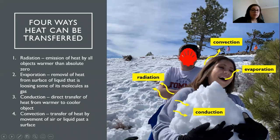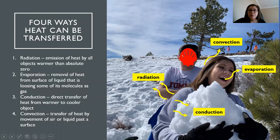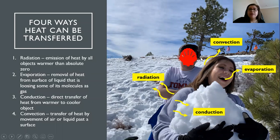We also see conduction, which is the direct transfer of heat from a warm to a cooler environment. My body is a lot warmer than the block of ice I'm holding, so my body is going to conduct heat into that block of ice. The last one is convection — the transfer of heat by the movement of air or liquid past a surface. If a gust of wind passes by me, I'm going to give up heat by convection.